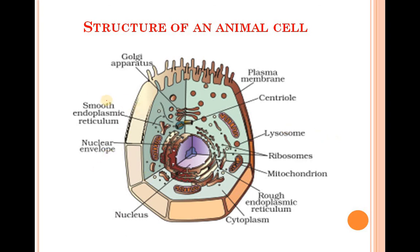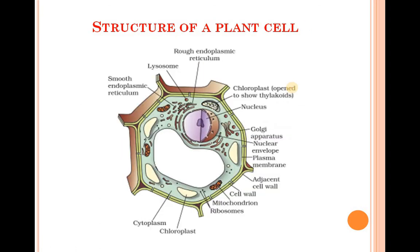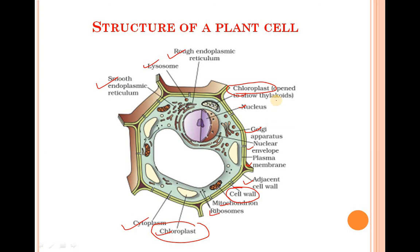Now the structure of the animal cell includes: Golgi apparatus, smooth endoplasmic reticulum, nuclear envelope, nucleus, cytoplasm, rough endoplasmic reticulum, mitochondria, ribosomes, lysosomes, and plasma membrane. The centriole is something mostly present in animal cells and helps in cell division. The structure of the plant cell includes: endoplasmic reticulum, lysosomes, smooth endoplasmic reticulum, cytoplasm, chloroplast, ribosomes, mitochondria, cell wall, plasma membrane, nuclear envelope, Golgi apparatus, nucleus, and chloroplasts — the circular structures present only in plant cells.